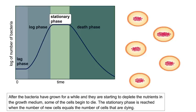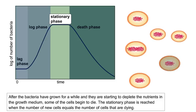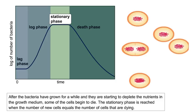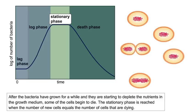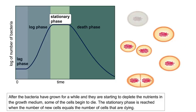After the bacteria have grown for a while and they are starting to deplete the nutrients in the growth medium, some of the cells begin to die. The stationary phase is reached when the number of new cells equals the number of cells that are dying.